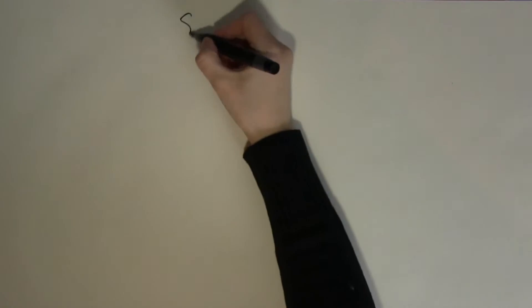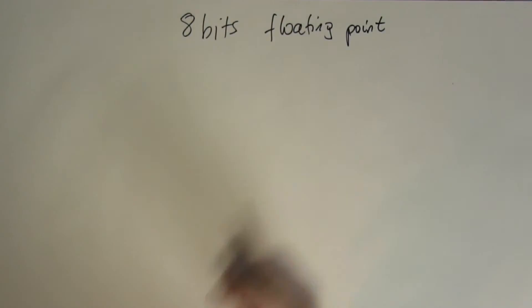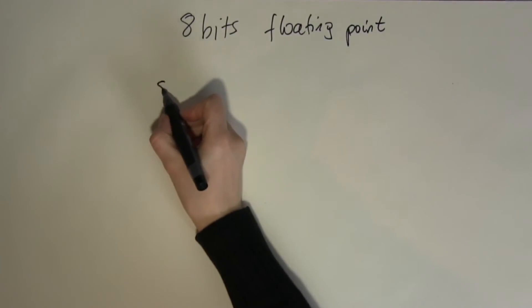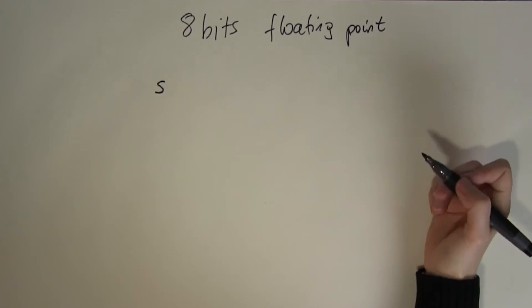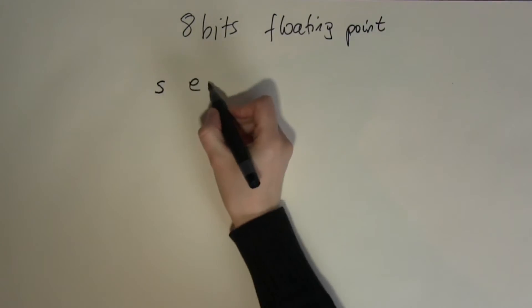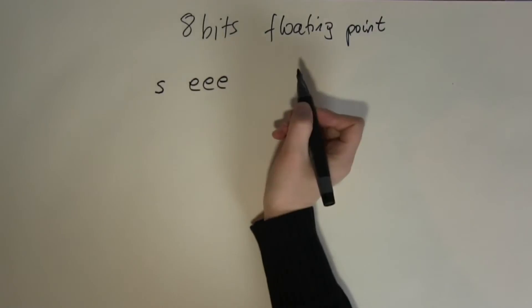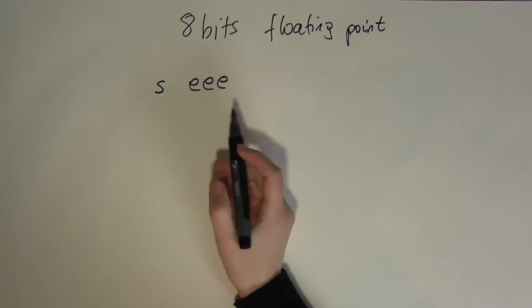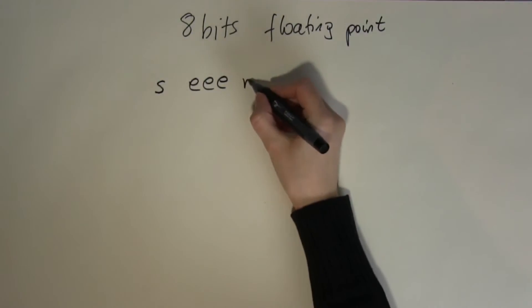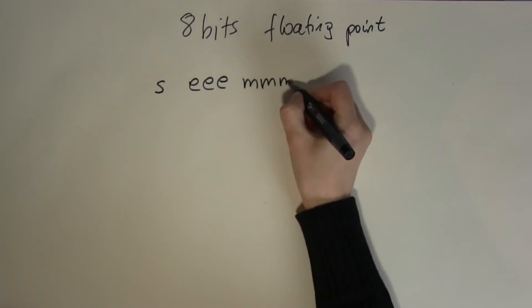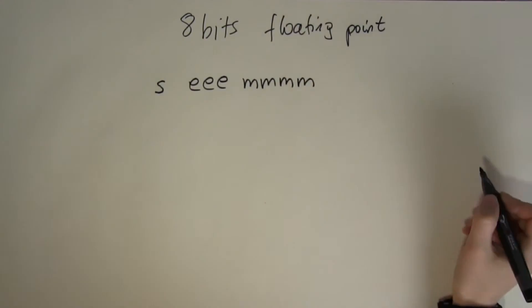So let's see what this floating point notation looks like. The 8 bits are broken up into 3 parts. The first part is just one single digit telling you the sign of your number. The next 3 digits we call the exponent, which tells the computer where to move the decimal point. And the last 4 digits are called the mantissa.